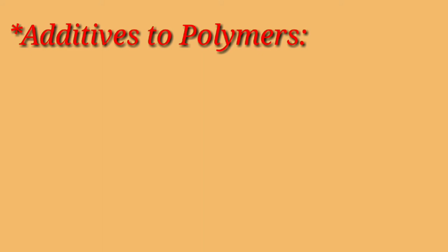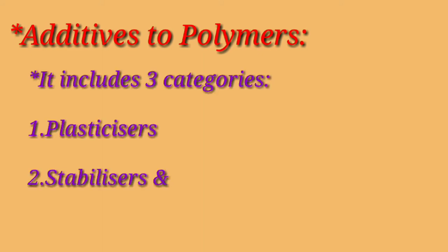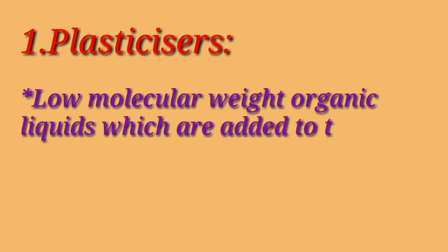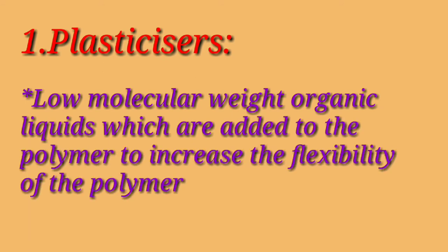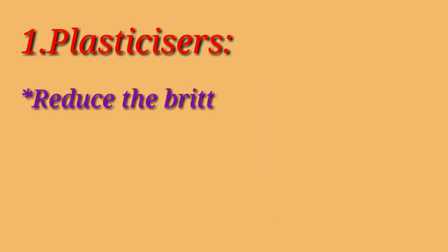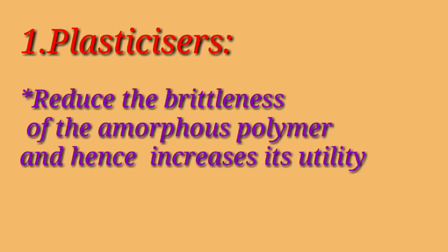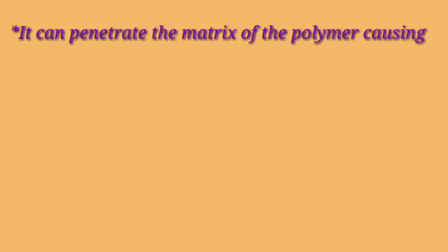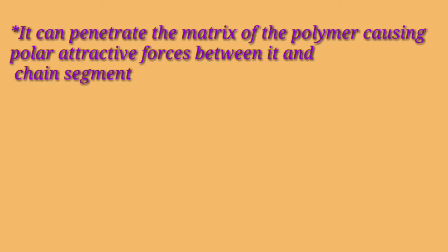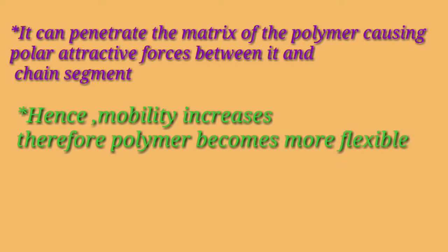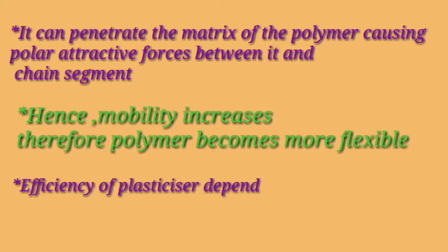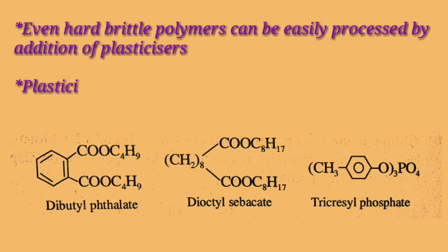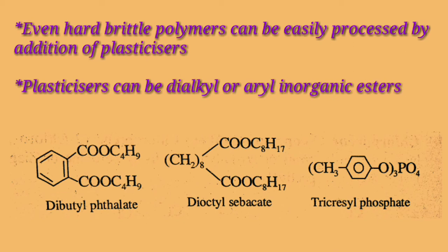Next is additives to polymers. It includes three important categories: first is plasticizers, second is stabilizers, and third is fillers. Plasticizers are low molecular weight organic liquids which are added to the polymer to increase its flexibility. They reduce the brittleness of the amorphous polymer and hence increase its utility. Plasticizers can penetrate the matrix of the polymer, causing polar attractive forces between them and chain segments, hence increasing mobility and making the polymer more flexible. Efficiency of plasticizers depends on solubility, polarity, and density. Even hard brittle polymers can be easily processed by addition of plasticizers. They can be dialkyl esters or aryl inorganic esters.